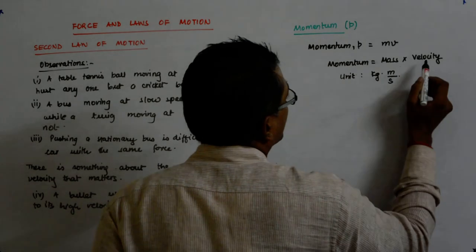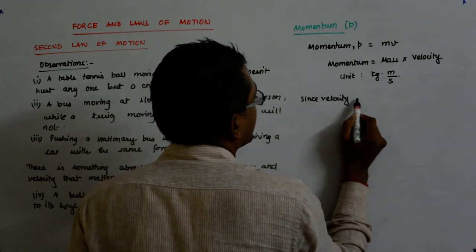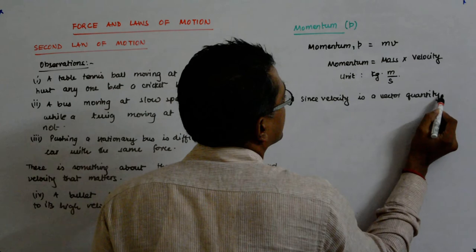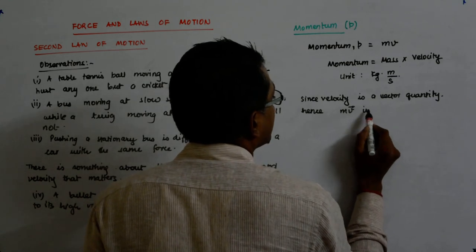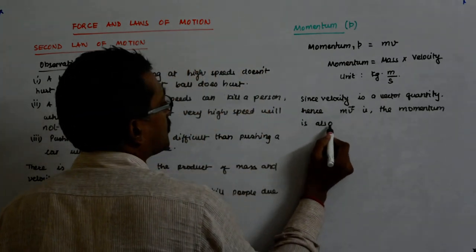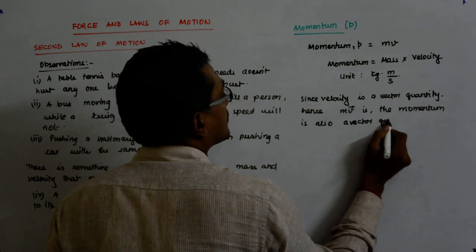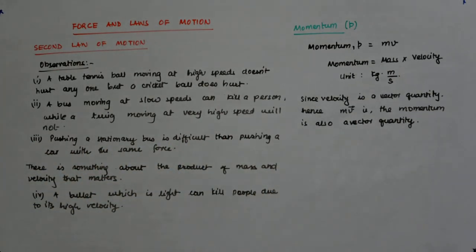Now velocity we know is a vector quantity. Since velocity is a vector quantity, hence mv, that is momentum, is also a vector quantity. Both are vector quantities.